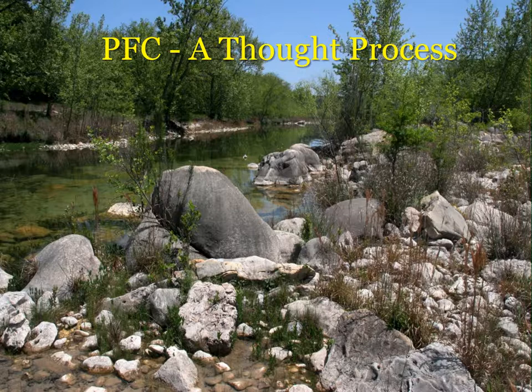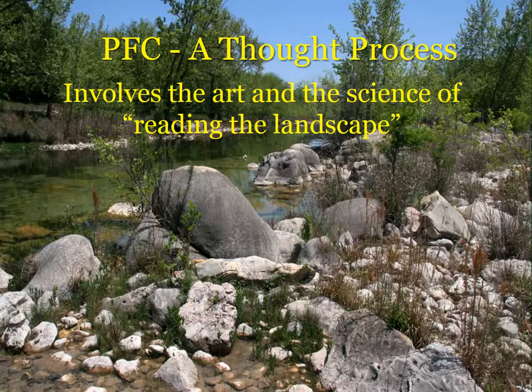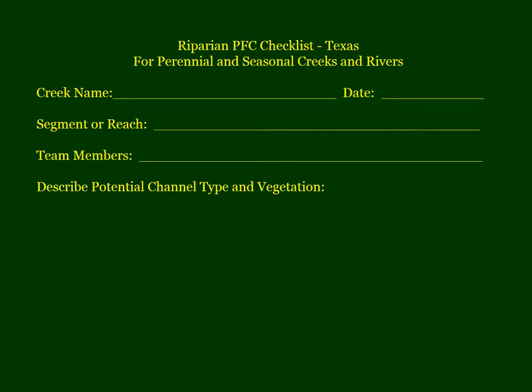The PFC assessment method is really a thought process — it helps people read the landscape, the art and science of reading a riparian area and figuring out what's going on. The heading on the Texas version of the PFC checklist includes the creek name, date, and a description of the reach being evaluated, which could be as short as a quarter mile or as long as two to three miles. Creeks are evaluated on a reach-by-reach basis.